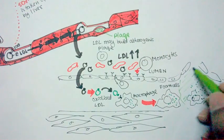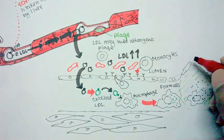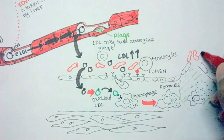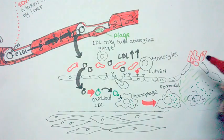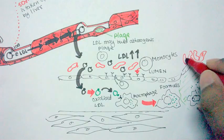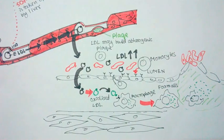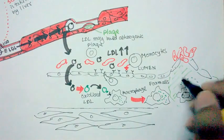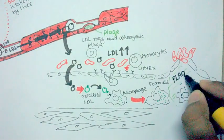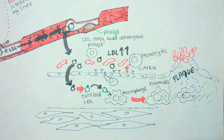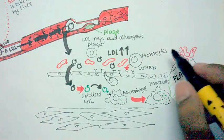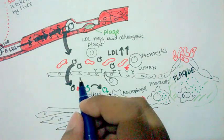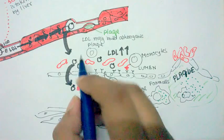Ultimately, a plaque develops, and at the mouth of the plaque a lot of RBCs can be attracted, forming a thrombus. This atherogenic plaque is the most extreme outcome — the plaque and the thrombus are the end result of this process.